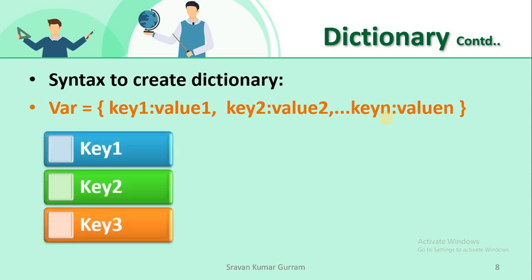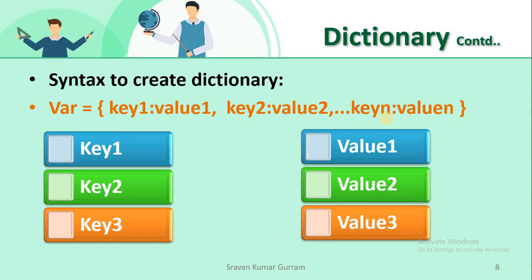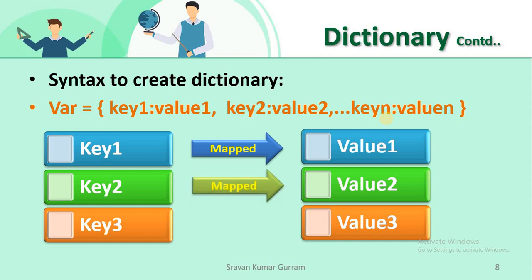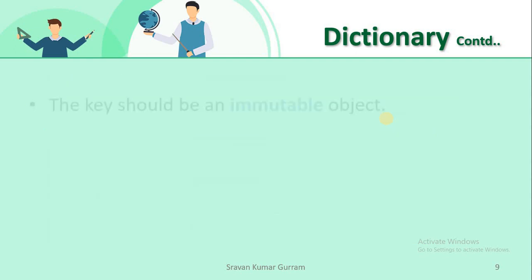For example, suppose we have key1, key2, key3 — let's say these are the hall ticket numbers of students — and value1, value2, value3 — let's say these are the names of the students. With a dictionary, we can map each key to its value, just like mapping a hall ticket number to a student name. If you know key1, you can find value1. Key2 maps to value2, key3 maps to value3, and so on.